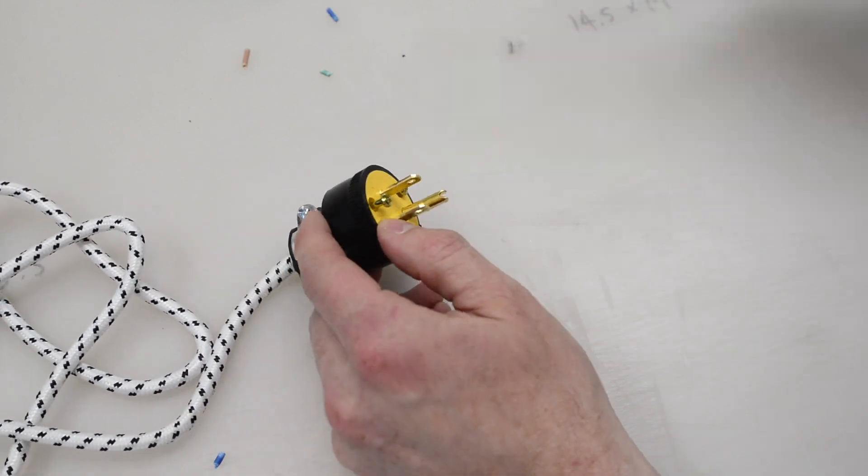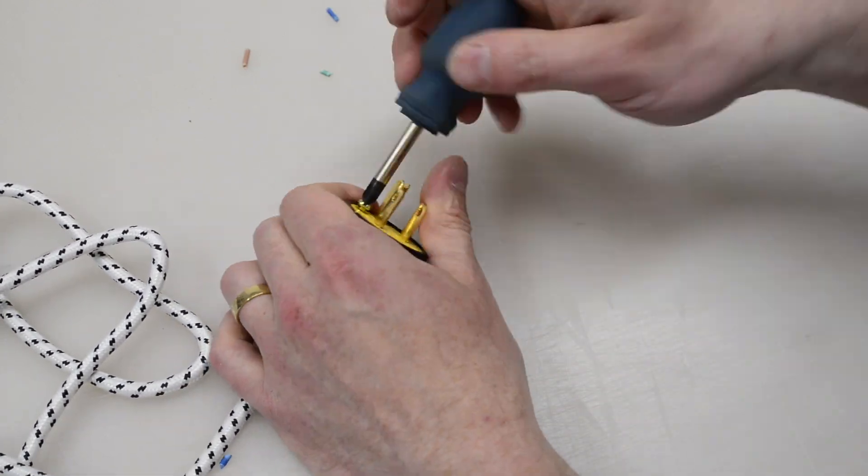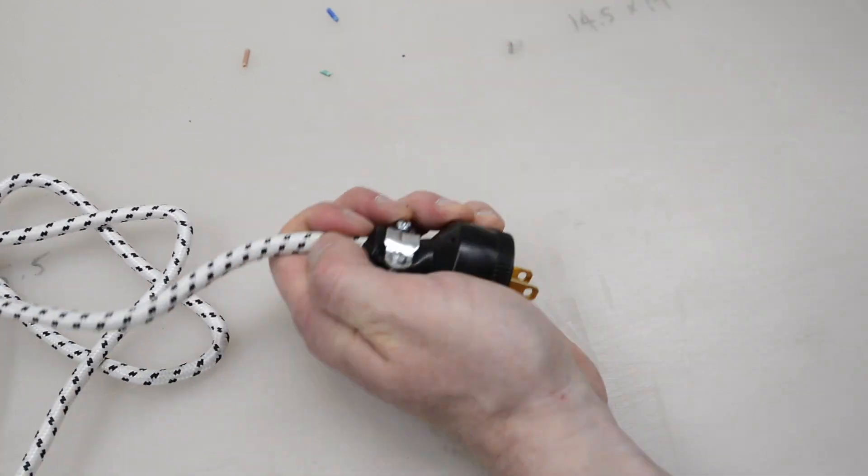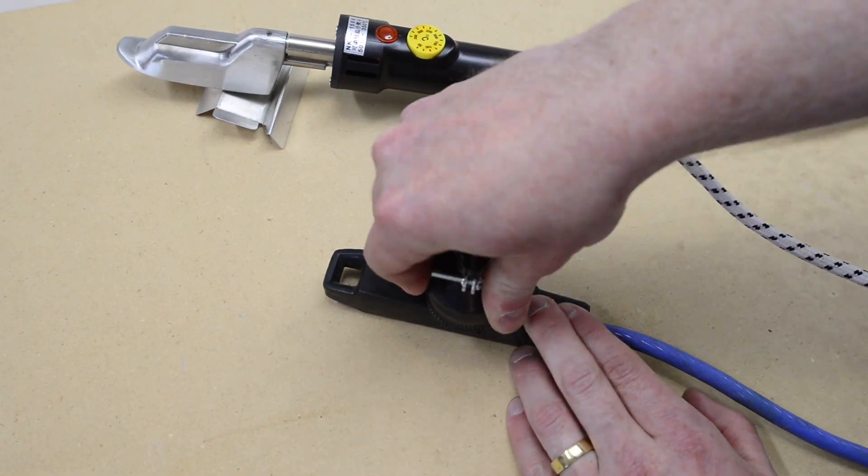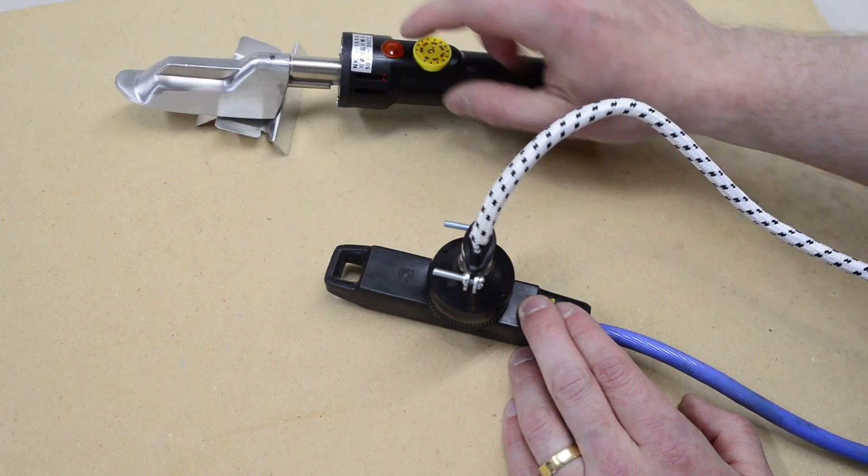After the wires are attached to the plug, secure the cover in place. Then plug the iron in and check to make sure the light comes on.